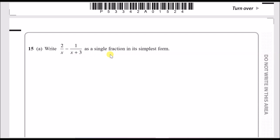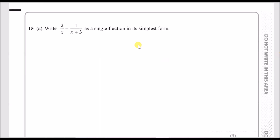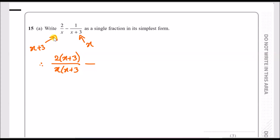Number 15a: write 2 over x minus 1 over (x plus 3) as a single fraction. To add or subtract fractions, they must have common denominators. Multiply the left fraction top and bottom by (x plus 3), and the right fraction top and bottom by x. This gives 2(x plus 3) over x(x plus 3), minus x over x(x plus 3).